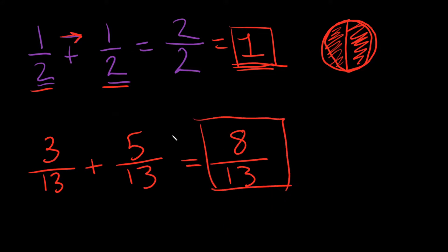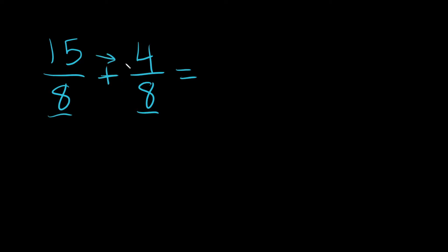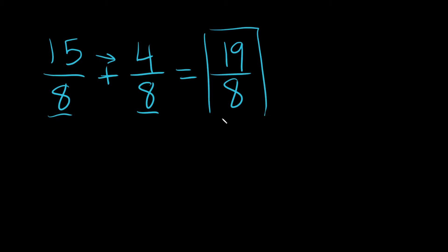Now, what if you had improper fractions? For example, if you had 15 over 8 plus a proper fraction, 4 over 8. Nothing changes. As long as you have the same denominator, you just add straight across. We have the same denominator, so we can automatically put 8 there. 15 plus 4 is just 19. Can we reduce this? No. Same thing — what if they were both improper fractions? It does not change anything. If we have the same denominator, that's all we need.